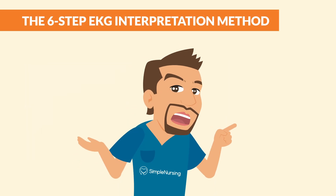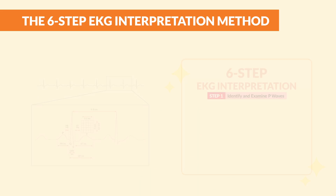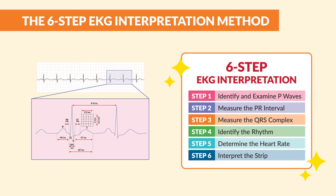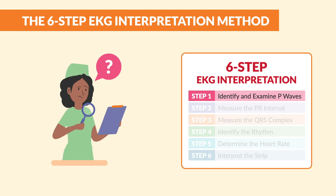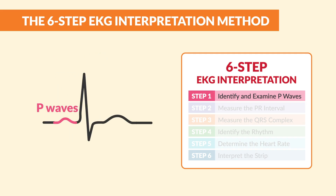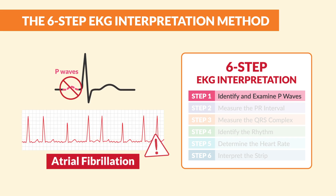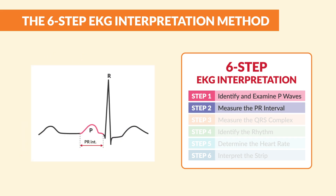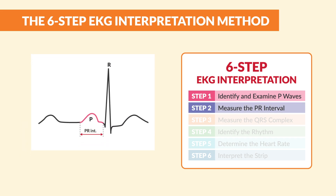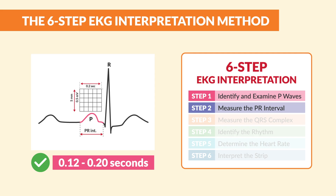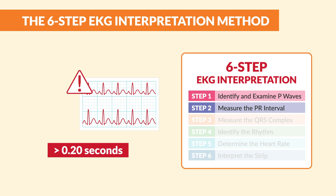Now that you've got the basics, here's where all the magic happens. Grab your EKG strip and follow the six-step EKG interpretation method. Step one: identify and examine the P waves. Are they present? Are they upright? Are they consistent? If the P waves are missing or inverted, think junctional rhythm or even atrial fibrillation. Step two: measure the PR intervals. Count those small boxes and remember that normal is 0.12 to 0.2 seconds. Anything longer could mean a heart block.